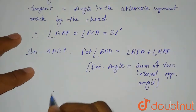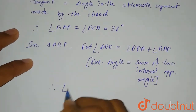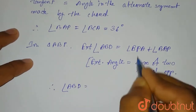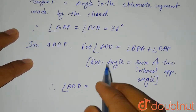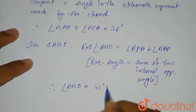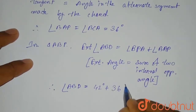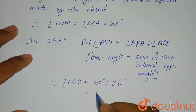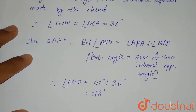Therefore, angle ABD will be equal to angle BPA, which is 42 degrees, plus angle BAP, which is 36 degrees, which will be equal to 78 degrees.